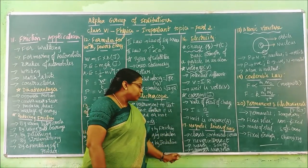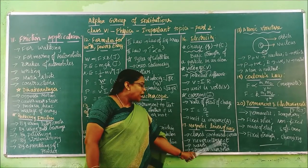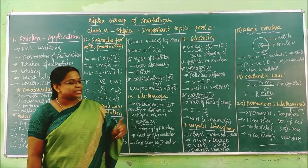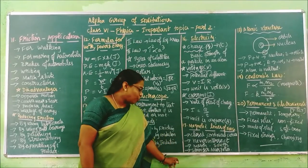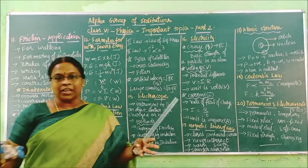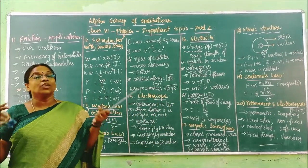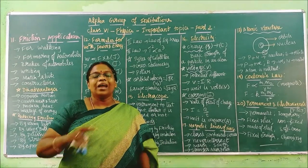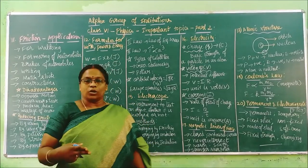Magnetic lines of force start from the North Pole and end at the South Pole. Near the poles — either North or South — the magnetic force is very high, and in the centre it becomes less than at the poles.